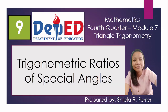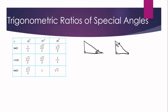Good morning, everyone. Today we are going to discuss the trigonometric ratios of special angles. What are these special angles? The special angles we are referring to are 30 degrees, 45 degrees, and 60 degrees. These are called special angles because, unlike other angles, we can get the value of their trigonometric ratios without using a calculator.